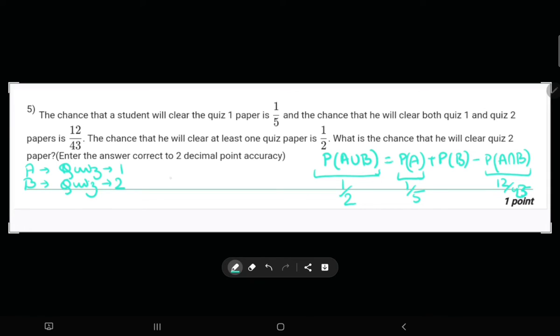Using this, we will say 1 by 2 equals 1 by 5 plus X minus 12 by 43, where X is P(B). It is quite complicated, so let us just use a calculator.